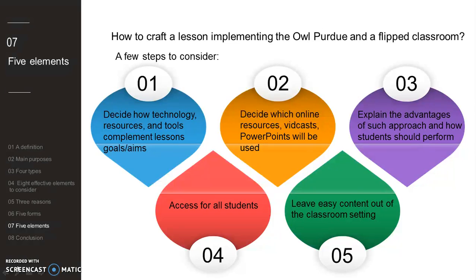Equally important, teach your students how to watch, take notes, and engage proactively with the content. Also, access for all means making sure that all learners have the technology needed to practice at home or during any time or space desired. If not, creating a contingency plan with alternative methods will guarantee access and success. Remember to leave the easy content for outside the classroom — if students have already viewed certain content online, there's no need to repeat it in class, as this would defeat the purpose of the model.